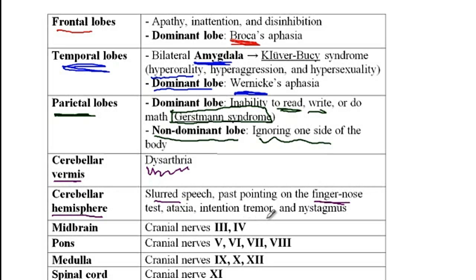Patients with cerebellar hemisphere lesions also have intention tremor as well as nystagmus. A high-yield point is to know where the nuclei of different cranial nerves are located: the midbrain houses the nuclei of cranial nerves 3 and 4; the pons has nuclei of cranial nerves 5, 6, 7, and 8; the medulla has cranial nerves 9, 10, and 12; and the spinal cord has the nucleus of cranial nerve 11.